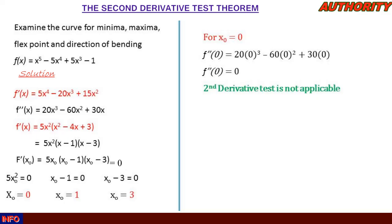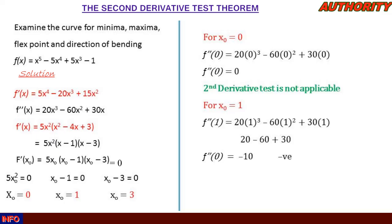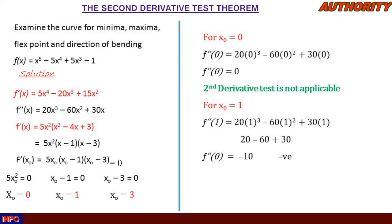For x₀ = 1, we plug into the second derivative: f''(1) = 20(1)³ − 60(1)² + 30(1) = 20 − 60 + 30 = −10. Since the result is negative, f(1) is a local maxima of the function f(x), and the nature of the graph is concave down at x₀ = 1.